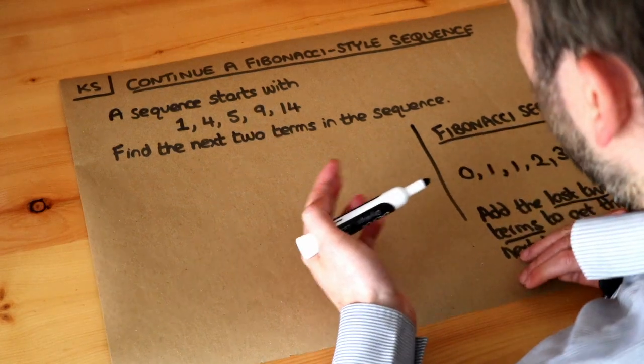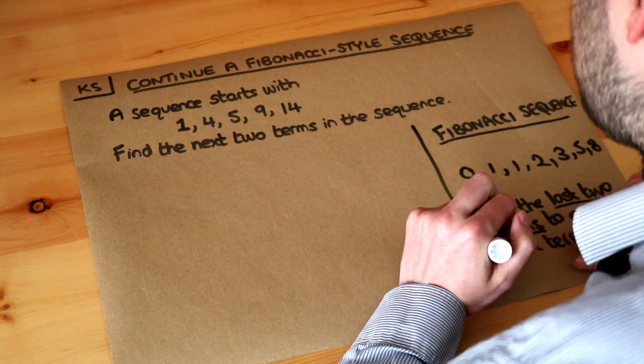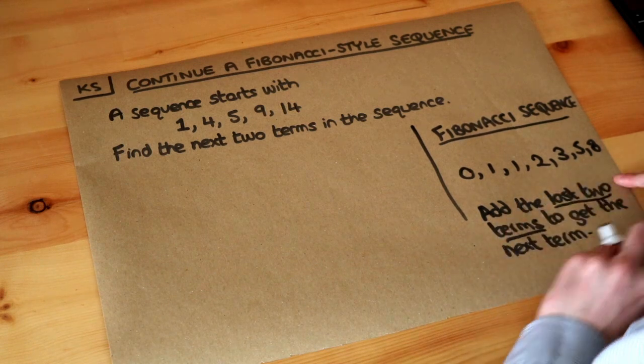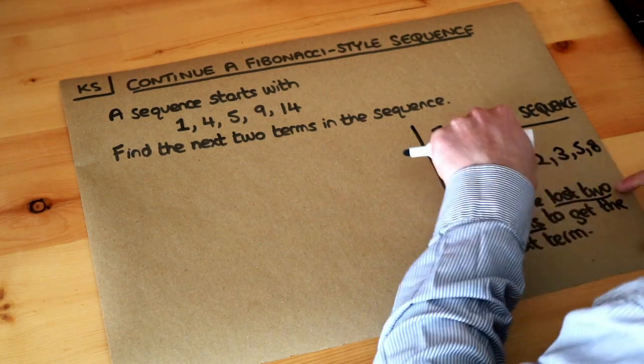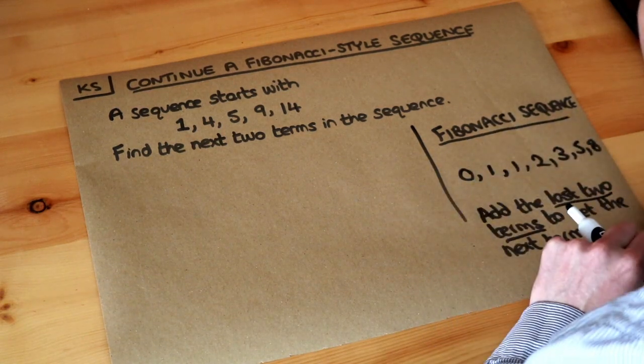Now, we can also have a Fibonacci-style sequence. And that means it still has this same rule, adding the last two terms to get the next term. But it starts with different numbers. The Fibonacci sequence must start with 0 and 1.